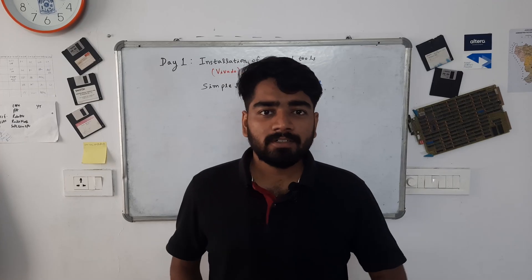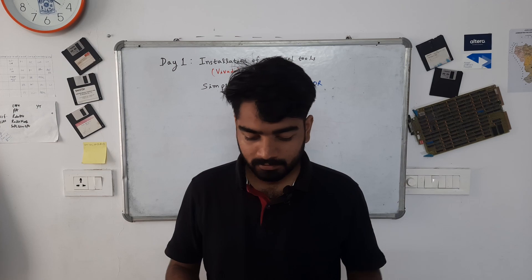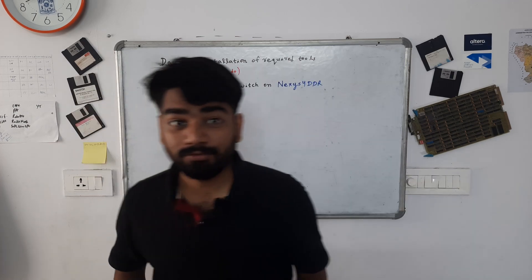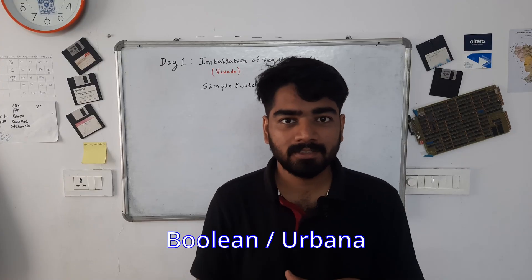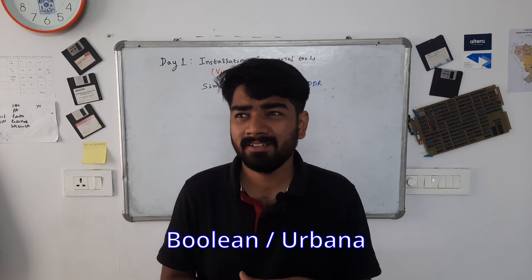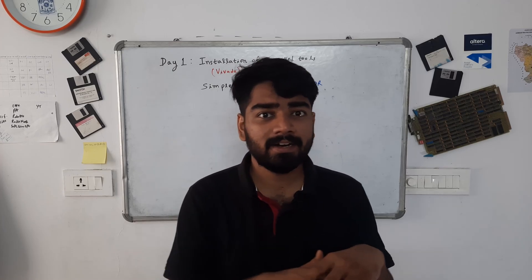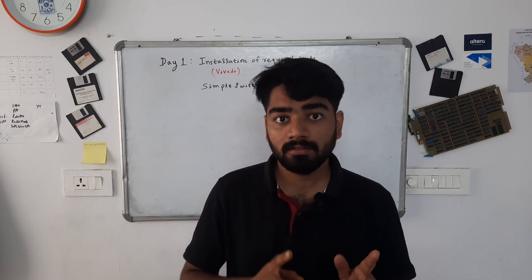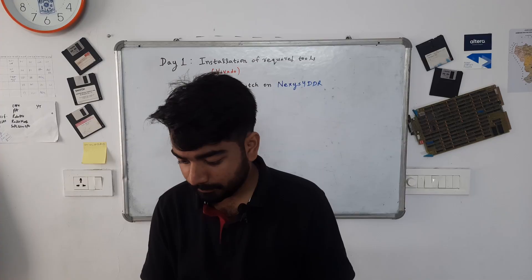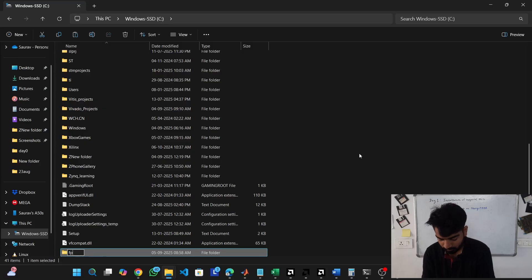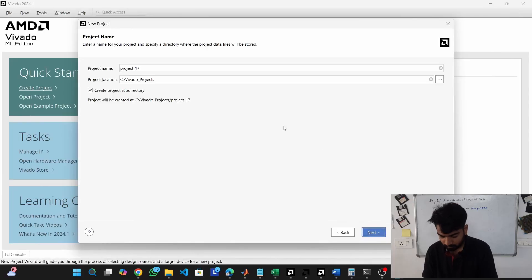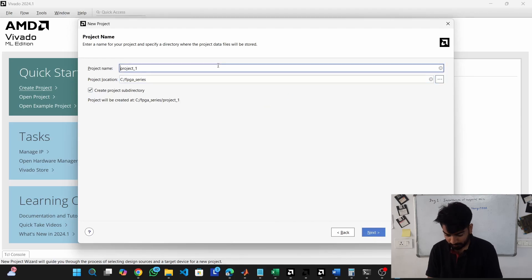Now let's start designing our first project. I'll be using the Nexus 4 DDR board. If you have other boards — Boolean FPGA boards or Urbana FPGA boards — those are what labs typically provide. First, go to Vivado and create a project. Create a new folder where you will store all your projects, click next, and choose that folder.